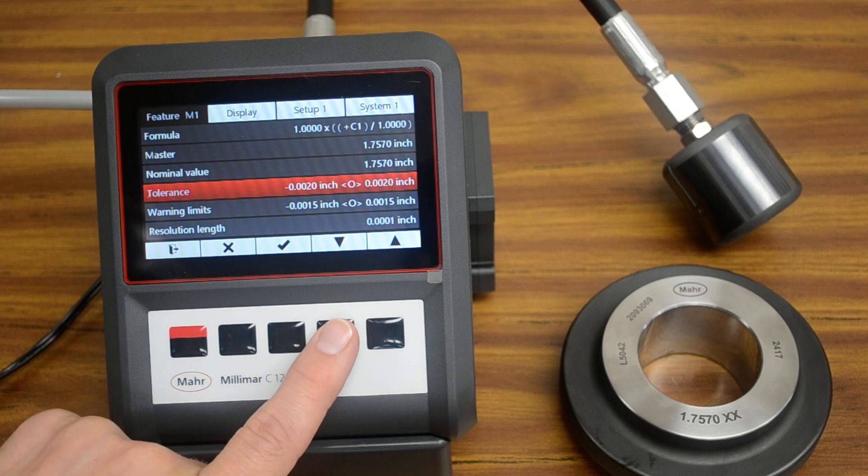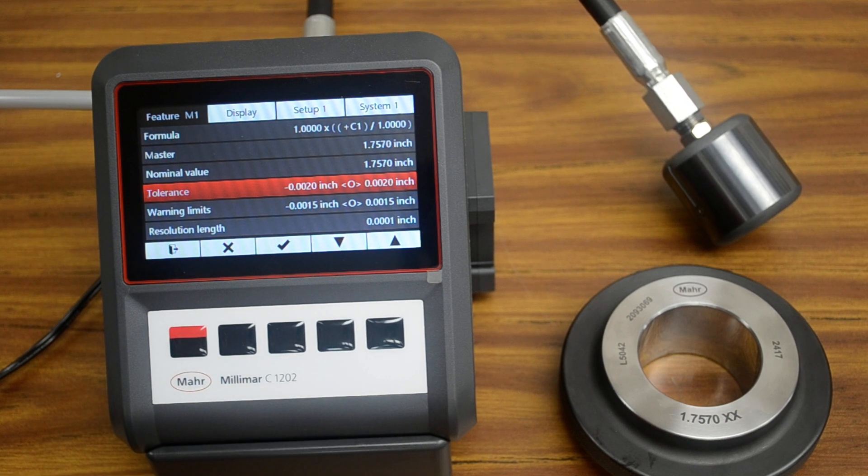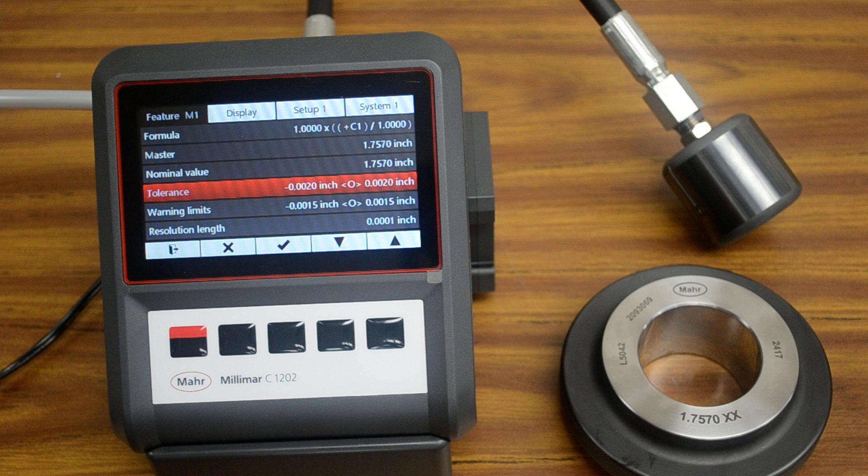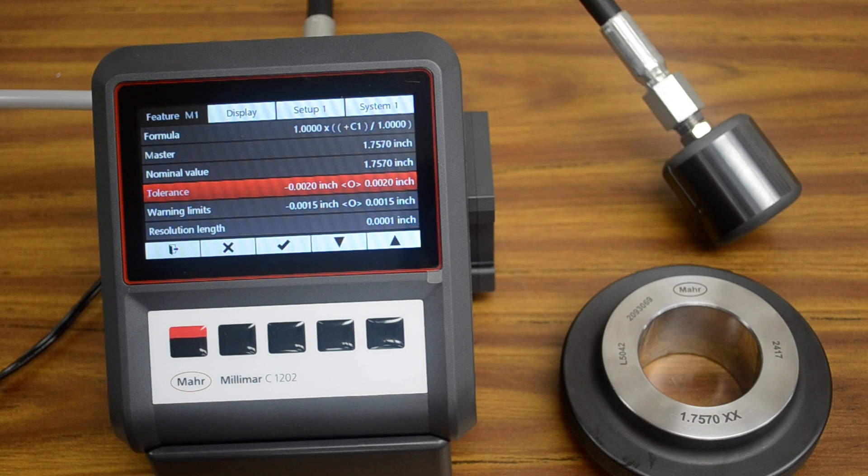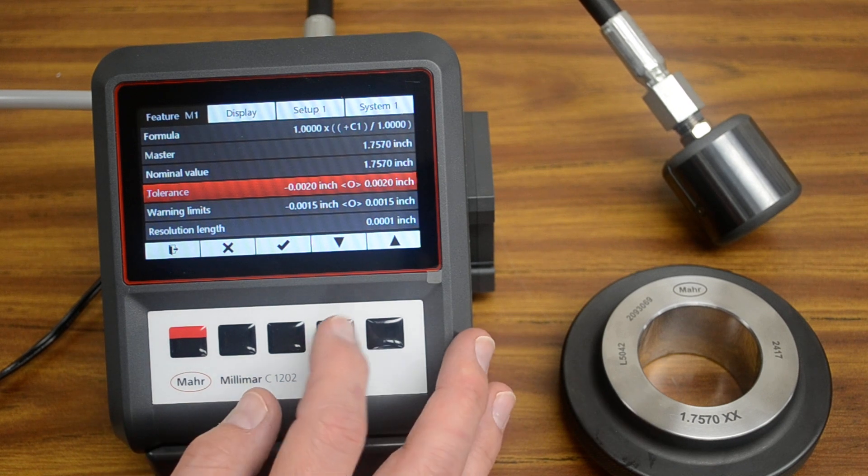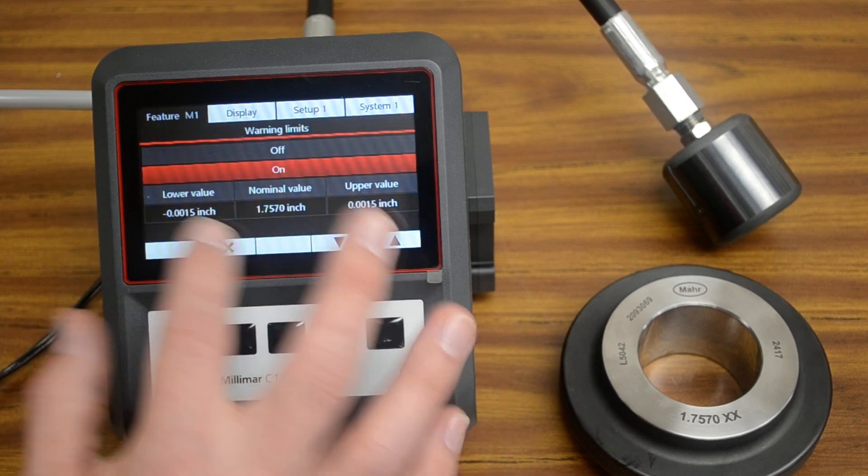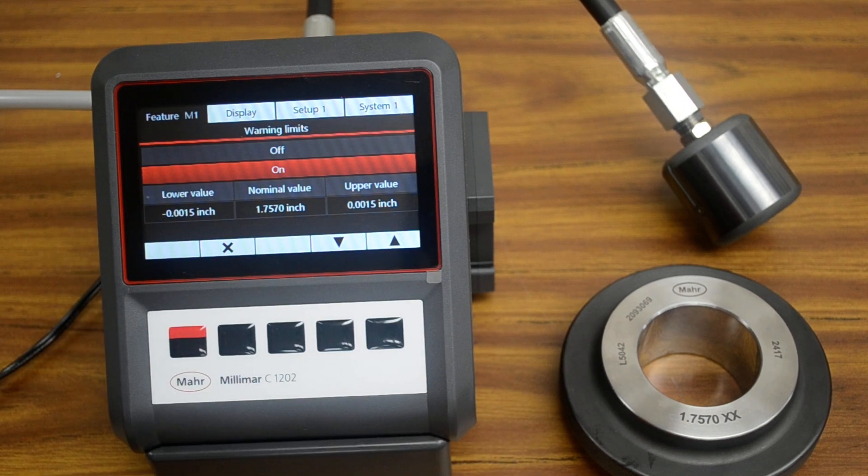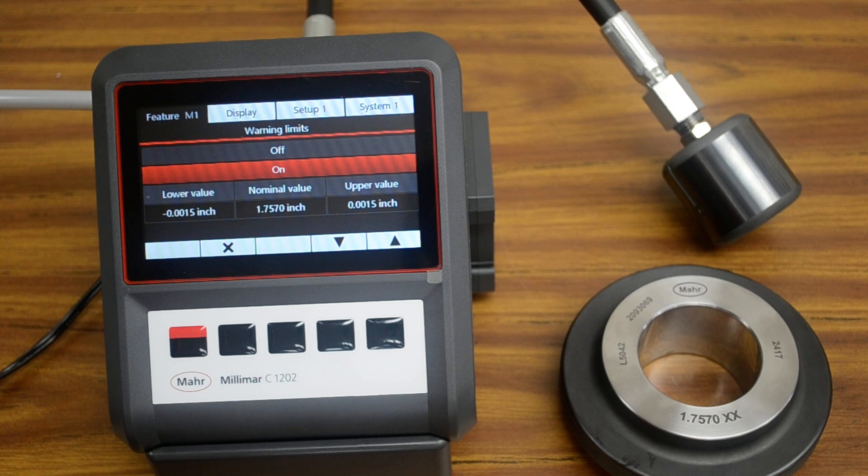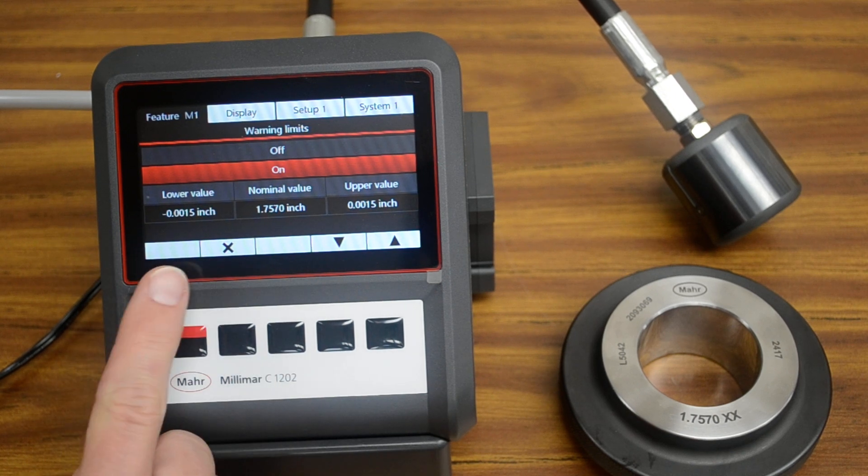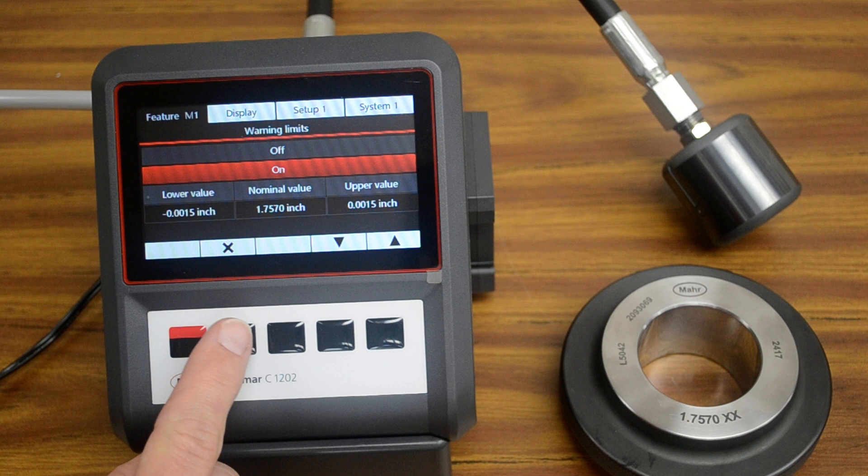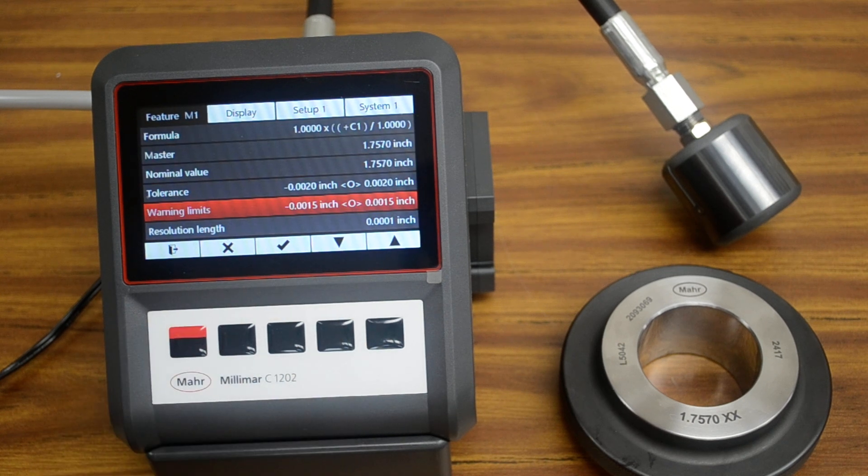Warning limits work exactly the same, except if you're out of tolerance, it'll show red. If you're in a warning zone, it'll show yellow. So we can go down, and we could set up our lower and upper values exactly the same as the tolerance limits. Again, I've already set this up. I'm not going to change anything, so it doesn't give me a save option. I'm just going to X and go back to the previous screen.